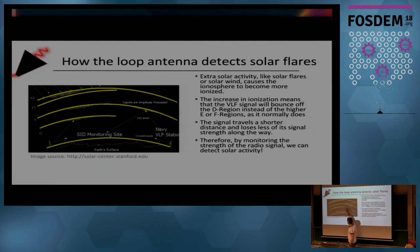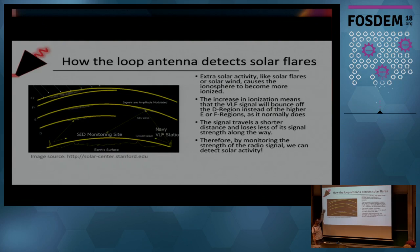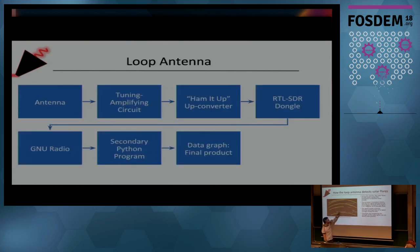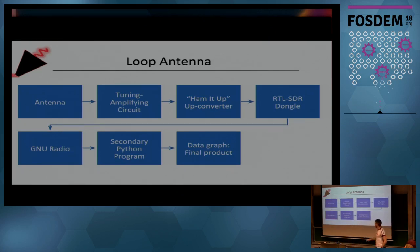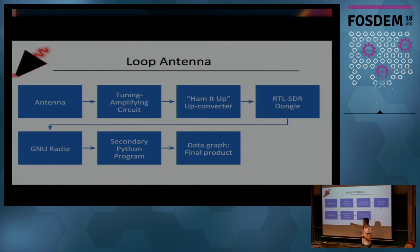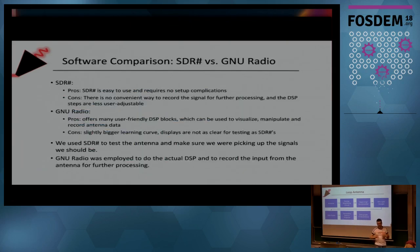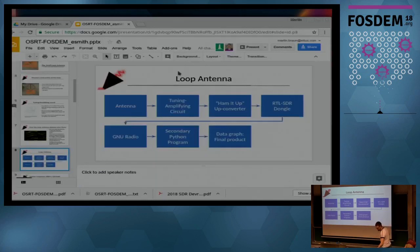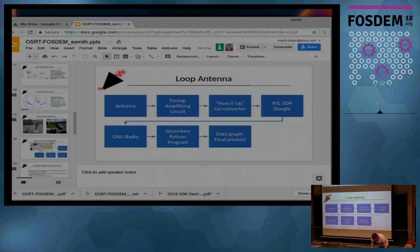VLF goes everywhere, and one thing that is a nice neat effect in this experiment is: when there are solar flares, the ionosphere changes its charge level, which has the effect that a VLF signal bounces off the ionosphere earlier than it usually does. For those familiar with ham exams, these are layers in the ionosphere — HF bouncing usually happens in the F1/F2 region, and VLF bounces off a little earlier. When you have a solar flare, even more so — meaning the received power at your monitoring site is higher. Using that small loop antenna you can measure that. The kit includes all the software: starting from the antenna, the amplifying circuit, the Ham It Up, into an RTL-SDR, through GNU Radio for preprocessing, then a Python program that is part of the OSRT kit that produces your graphs.